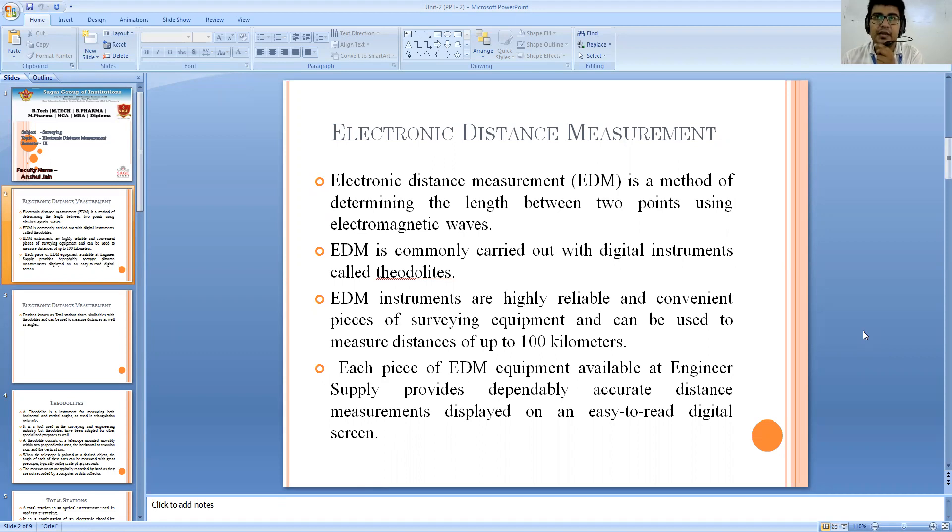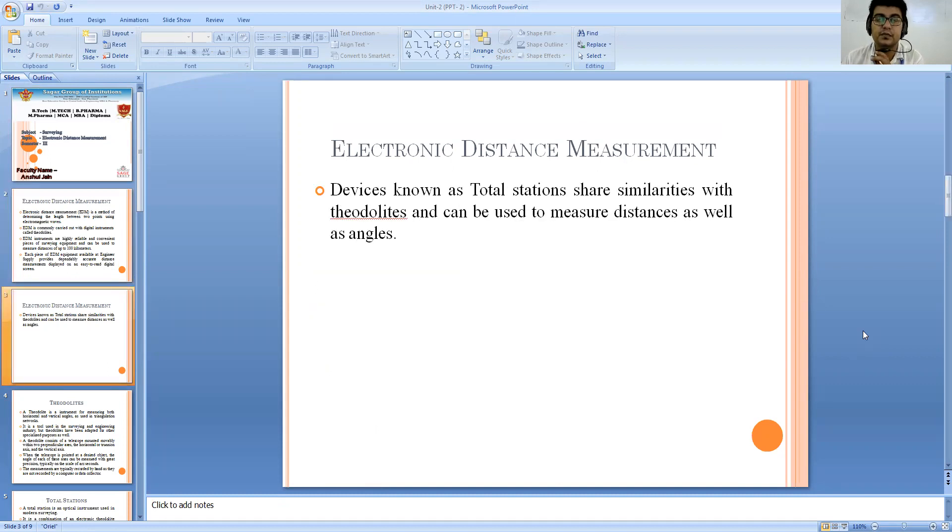It is commonly done with the help of digital instruments like theodolites, total stations, etc. EDM instruments are of very high reliability and they involve various types of gathering information up to hundred kilometers range also. If we talk about EDM equipment, it is available with all types of companies which are dealing with survey work so that accurate distance measurements can be done on a digital screen.